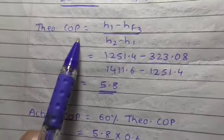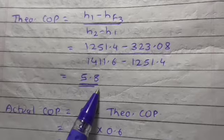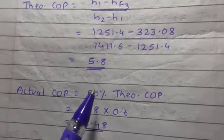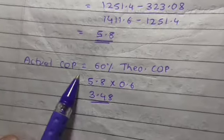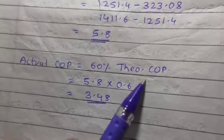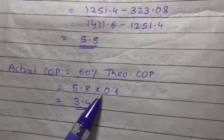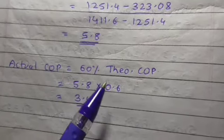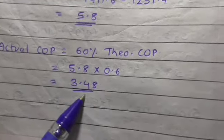Then theoretical COP: H1 minus HF3 divided by H2 minus H1. This is the same procedure we have adopted for all the problems. Theoretical COP is 5.8. Actual COP was to be calculated as 60% of theoretical COP, so 5.8 times 0.6, we get actual COP as 3.48.